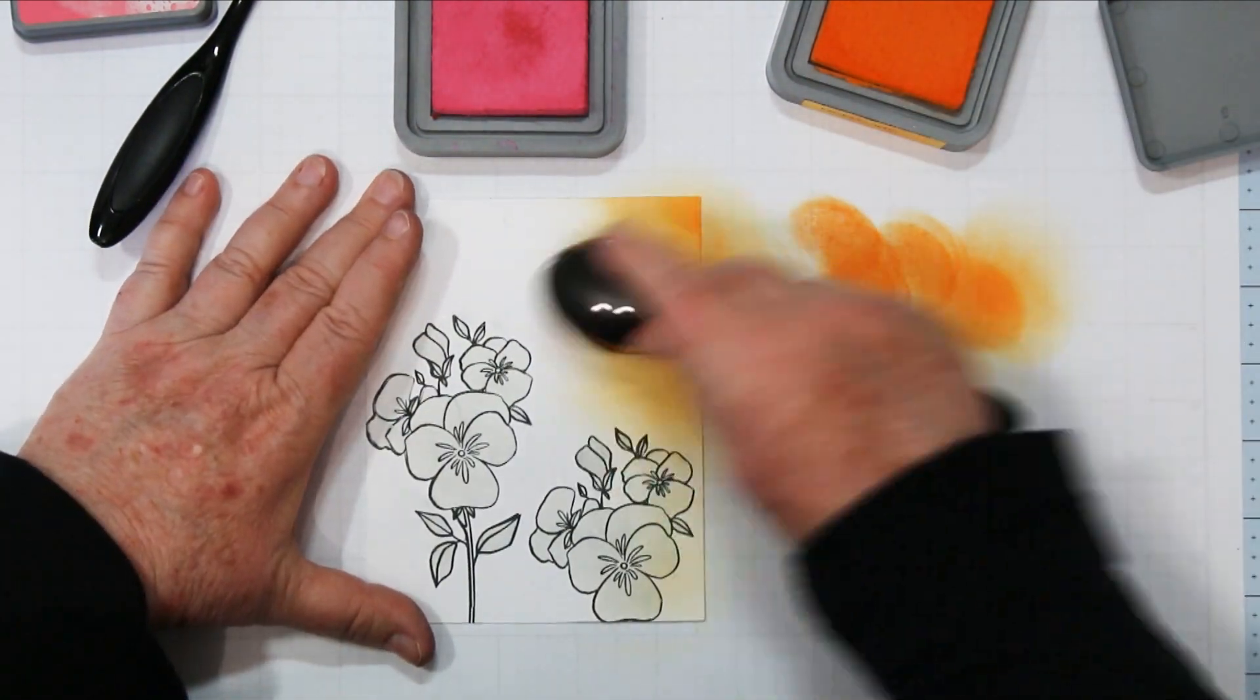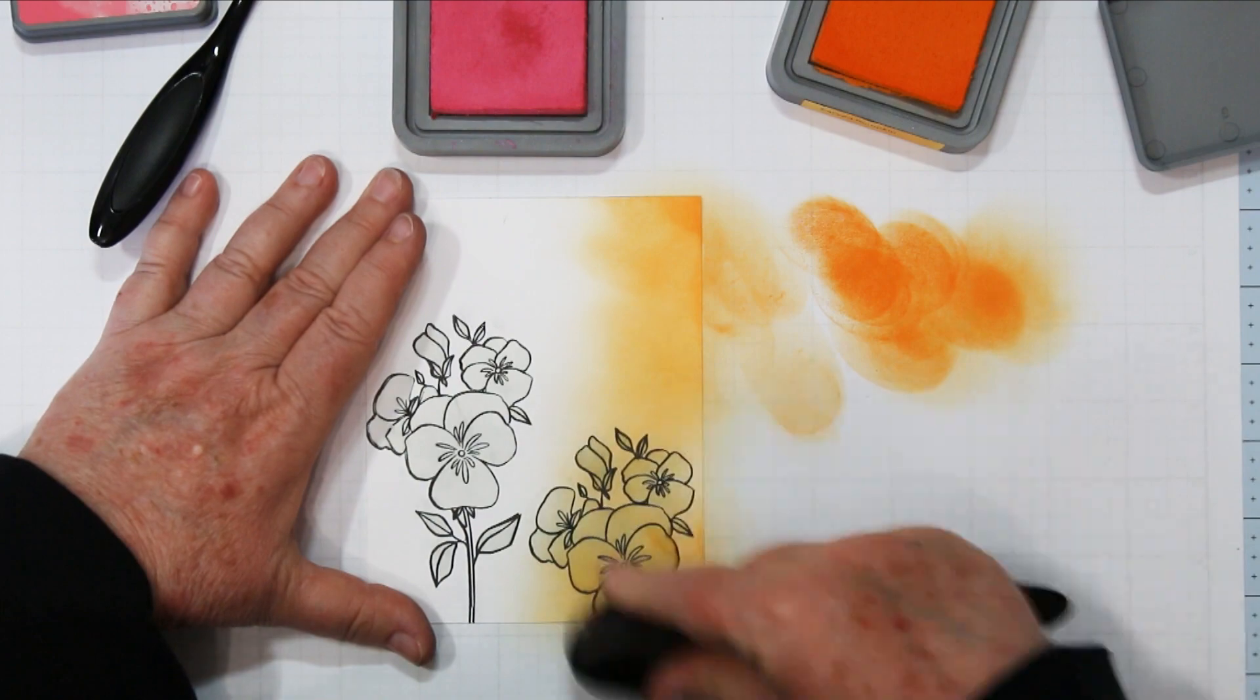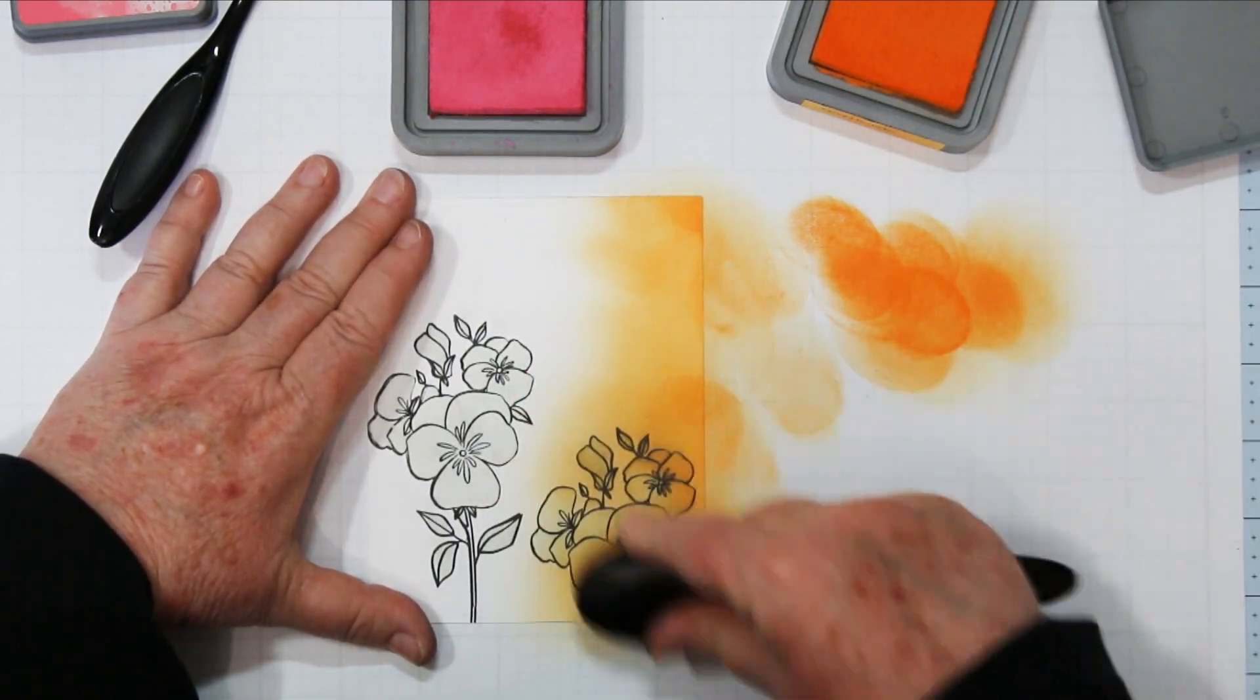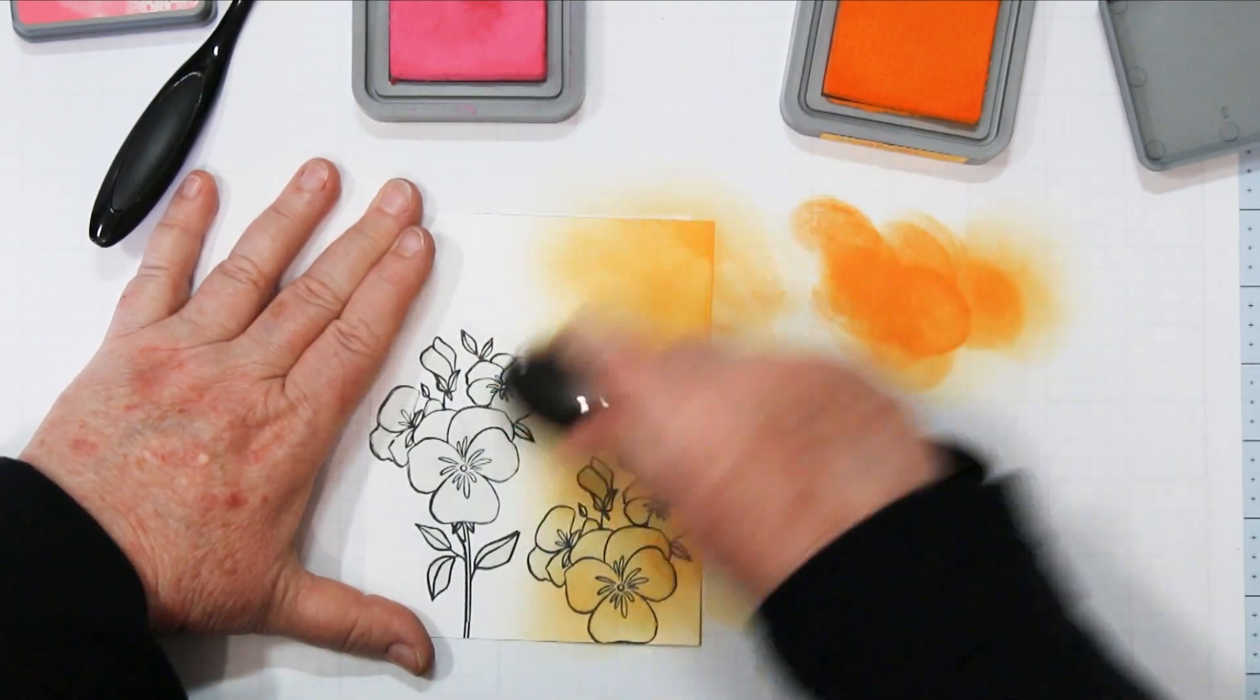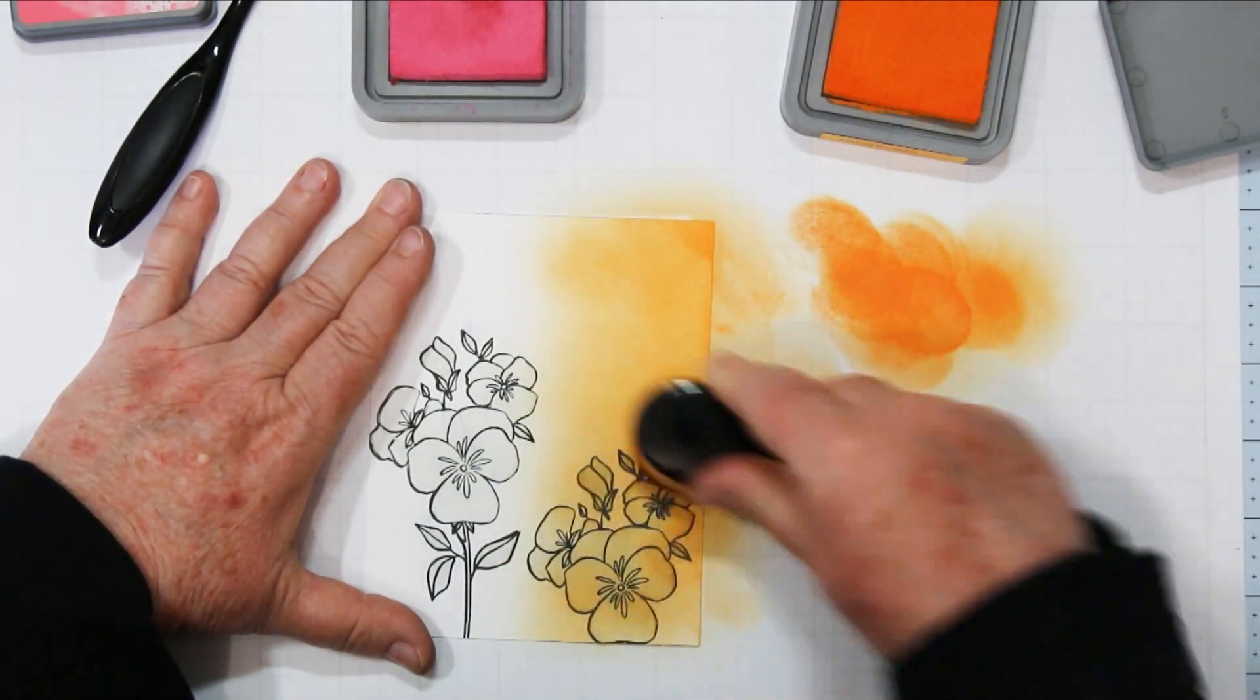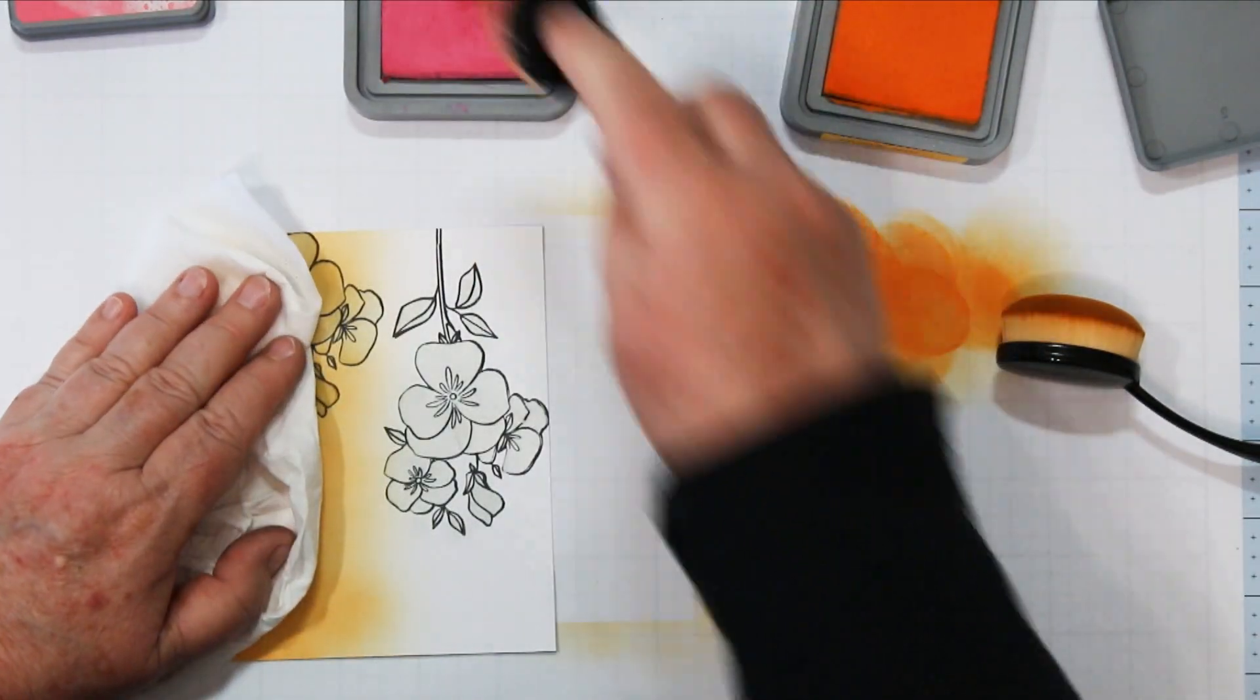And you'll notice that we're going to work our way across this time. Usually I'm giving you suggestions and we're using three colors and we're going top to bottom. This time I'm only using two and I'm going to go side by side but it's a really pretty blend in the middle when the two colors collide.